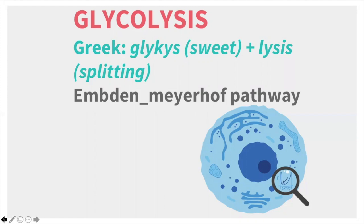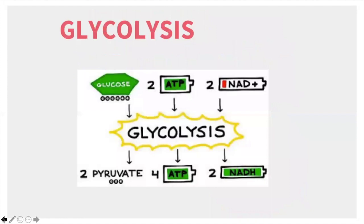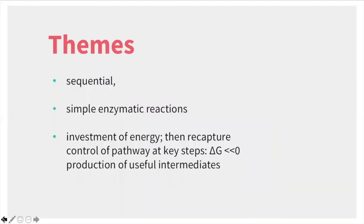You need to remember the Emden-Meyerhof pathway. As a summary of glycolysis: you start with a six-carbon molecule requiring two ATPs as investment and two NAD+ as low-energy stores. After this 10-step pathway, you produce two molecules of pyruvate (three carbons each), four ATPs, and two NADH — giving a net gain of two ATPs and two NADH, plus two pyruvate.